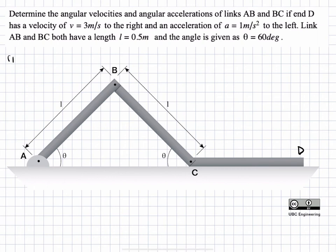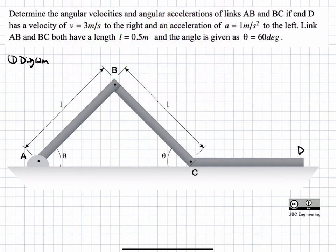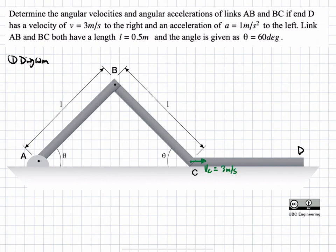Let's start with the diagram. We're given that CD moves with a velocity of three meters per second to the right and an acceleration to the left. Since CD is a rigid body, we can assume that D and C will have the same acceleration and velocity, and since it's sliding, there's no angular acceleration. So we can simply apply those values at C: VC equals three meters per second, and AC equals negative one meter per second squared.